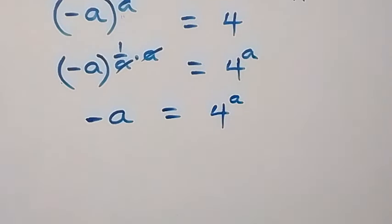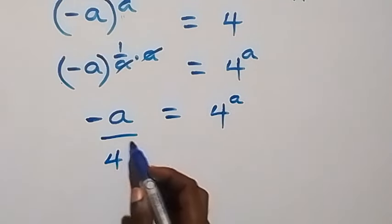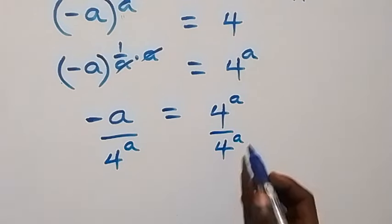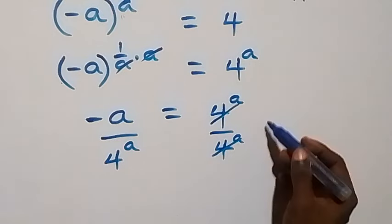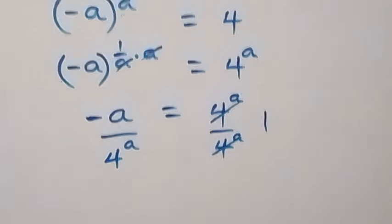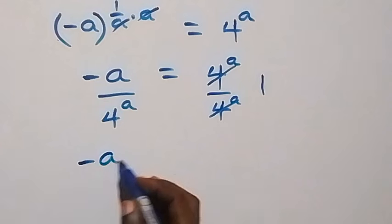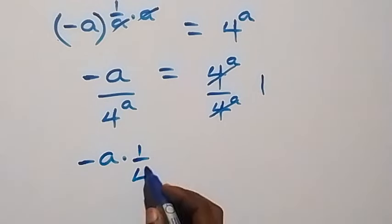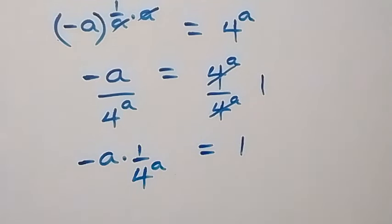From here, let's divide both sides by 4 raised to power a. So we have this side divided by 4 raised to power a, and also this side by 4 raised to power a. Here 4 raised to power a cancels out, and we are left with 1. Then we can write this as minus a times 1 over 4 raised to power a, now equals to 1.